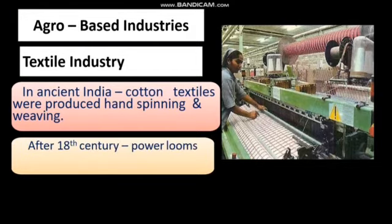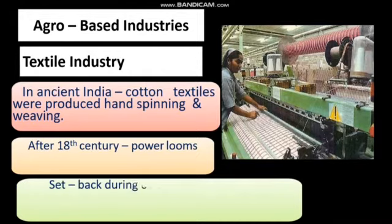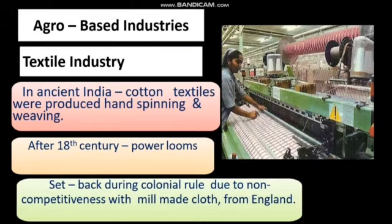In ancient India, cotton textiles were produced with hand spinning and hand loom weaving techniques. Power looms came to India in the 18th century. Our traditional textile industries suffered a setback during the colonial period because they could not compete with the mill-made cloth from England. It is the only industry in the country which is self-reliant and complete in the value chain — from raw material to the highest value-added products.